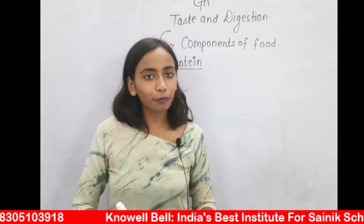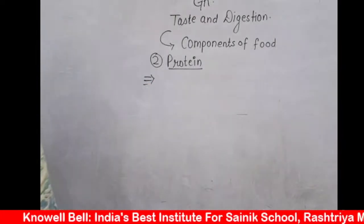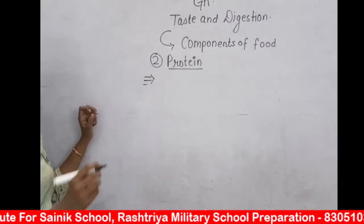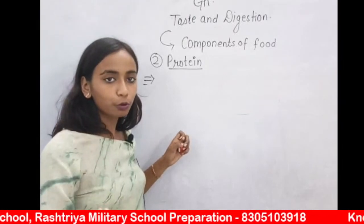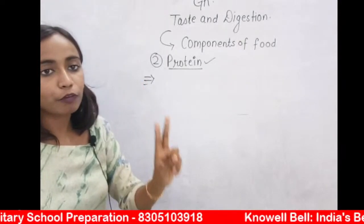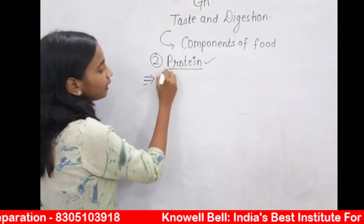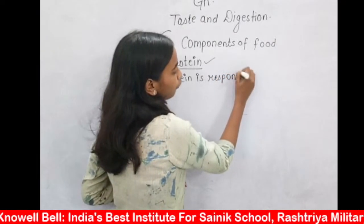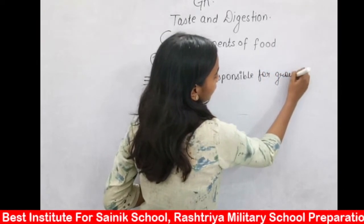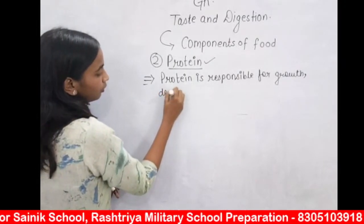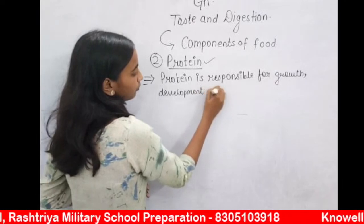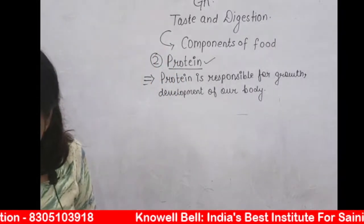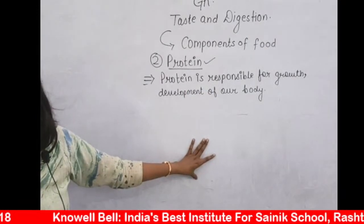Proteins are called building blocks of the body. The simplest form of protein — what does that mean? Digestion is the breakdown of food into simple absorbable forms. In the process of digestion, protein also gets digested. When protein gets digested, the form you get is amino acids. Amino acids are the simplest form of protein. Protein after digestion yields amino acids.